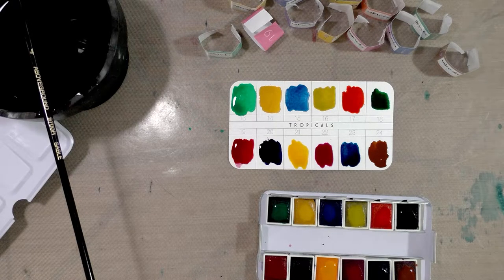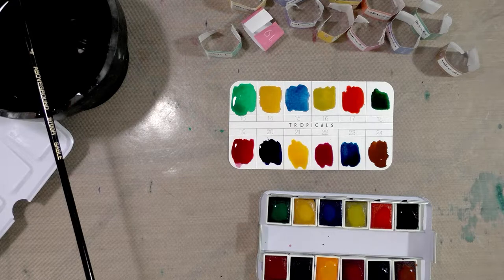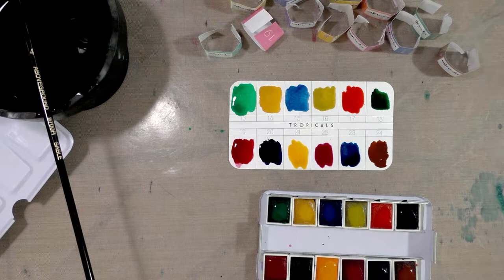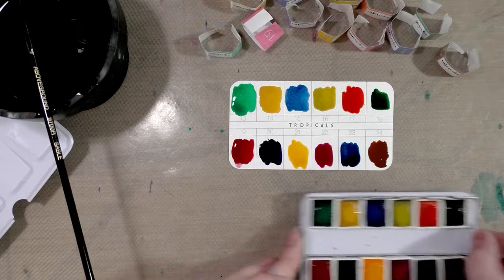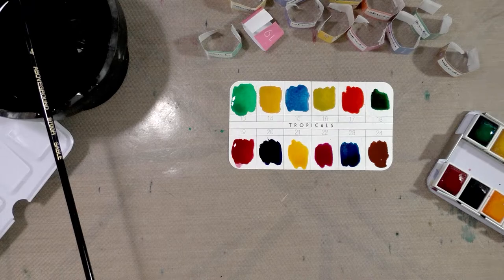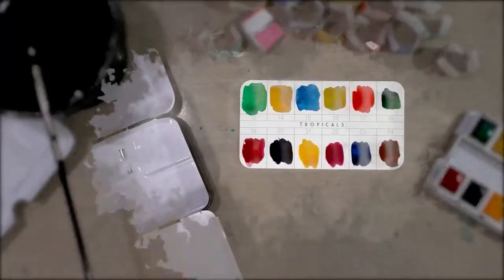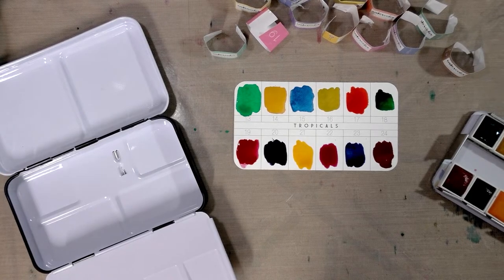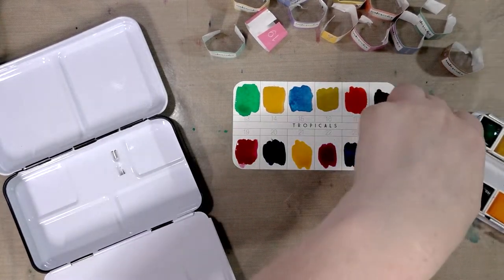From top to bottom, I believe this is viridian, yellow ochre, a bad ultramarine, yellow gold, scarlet, maybe a hunter's green.